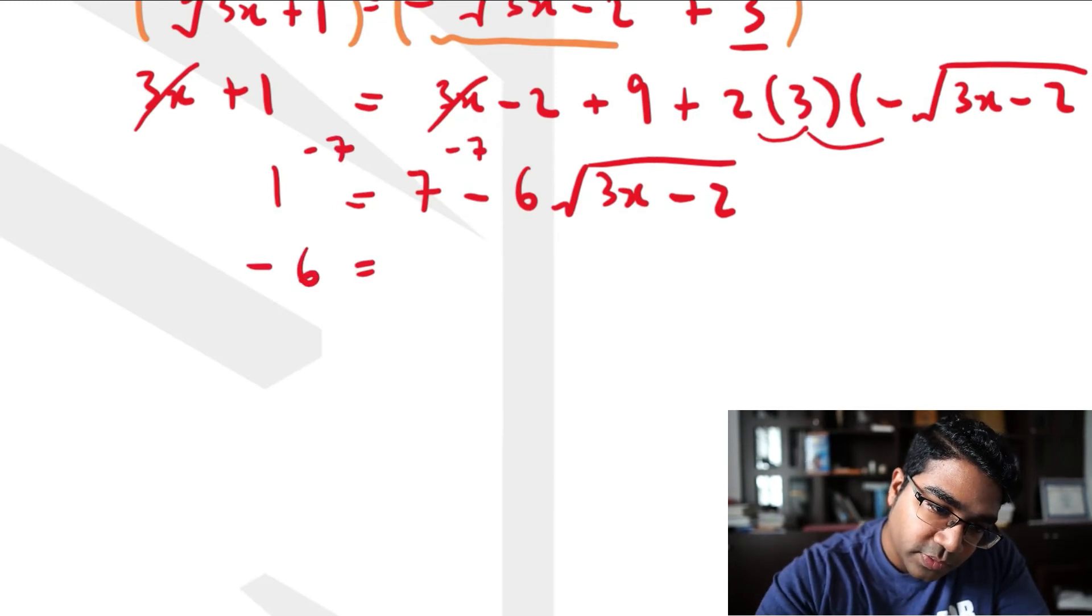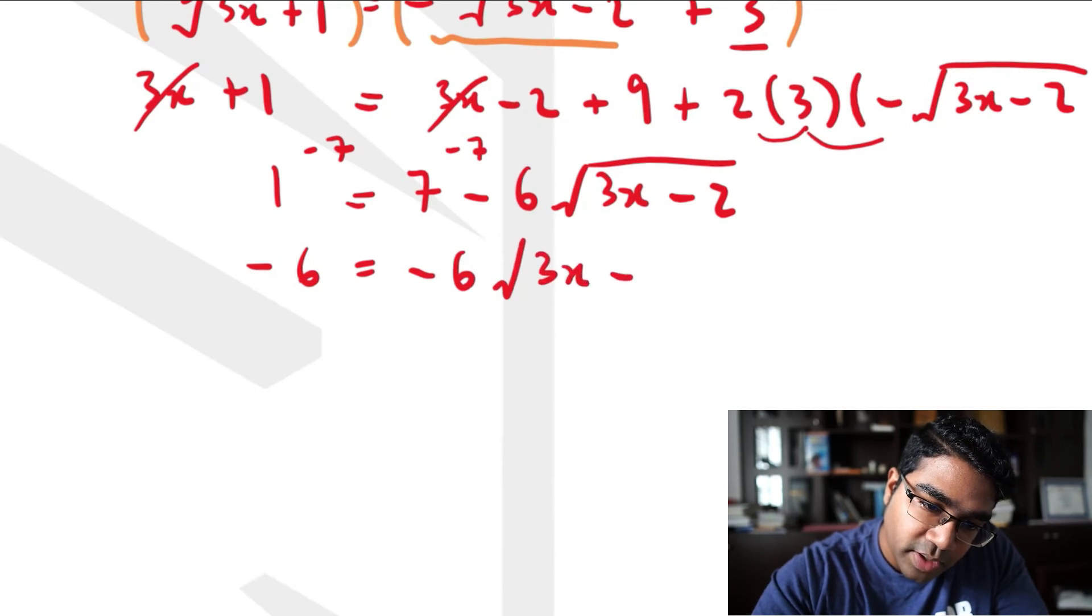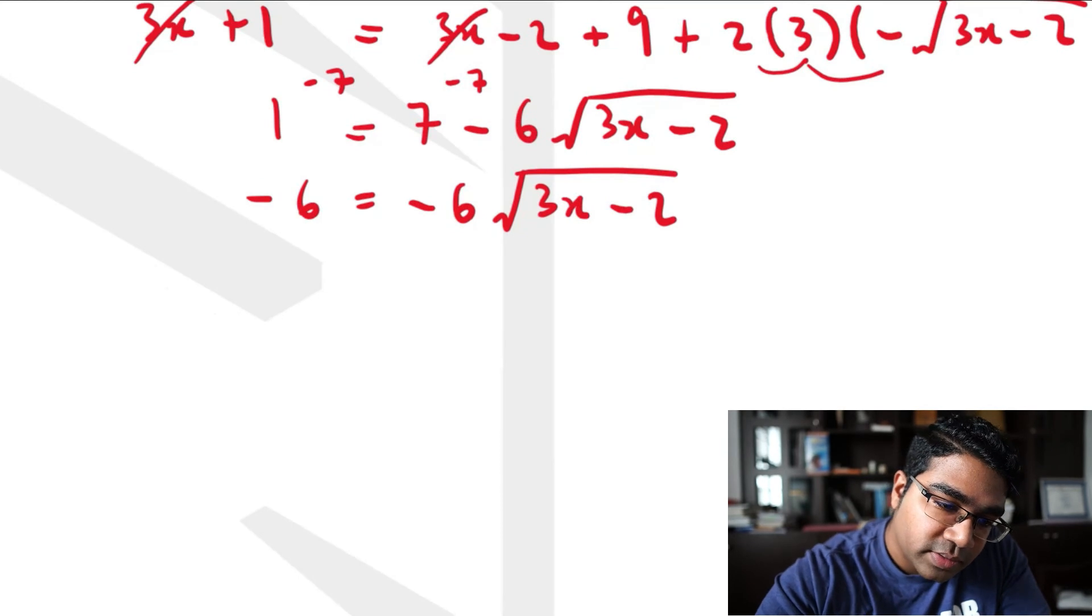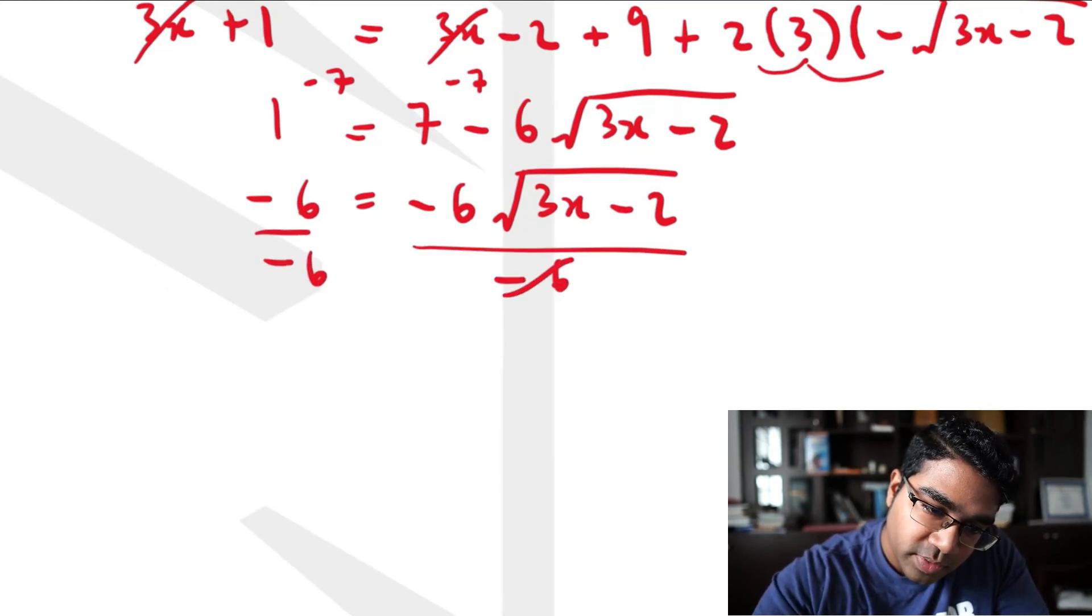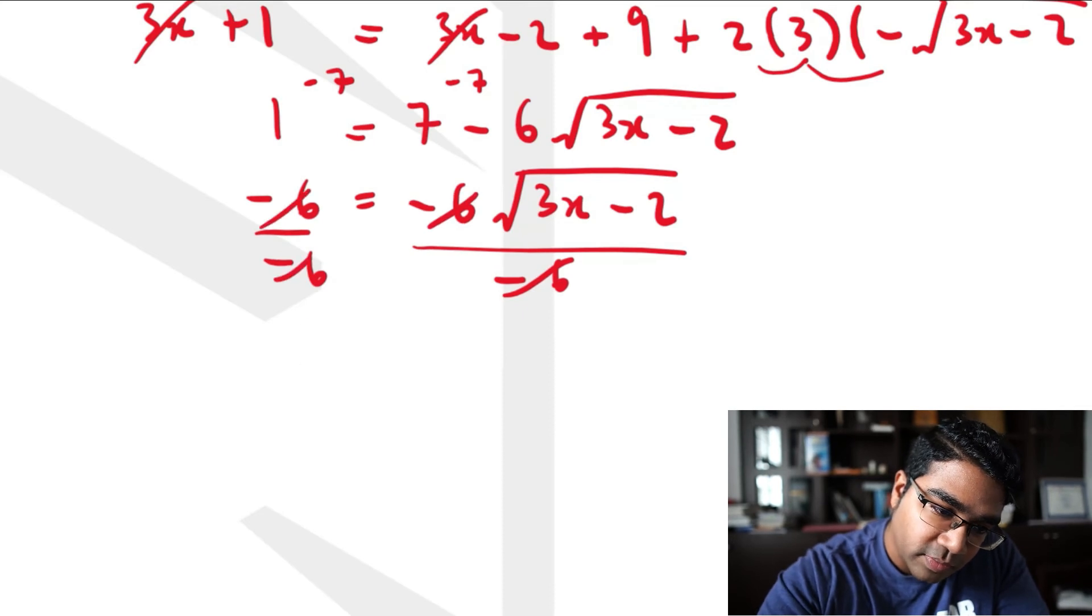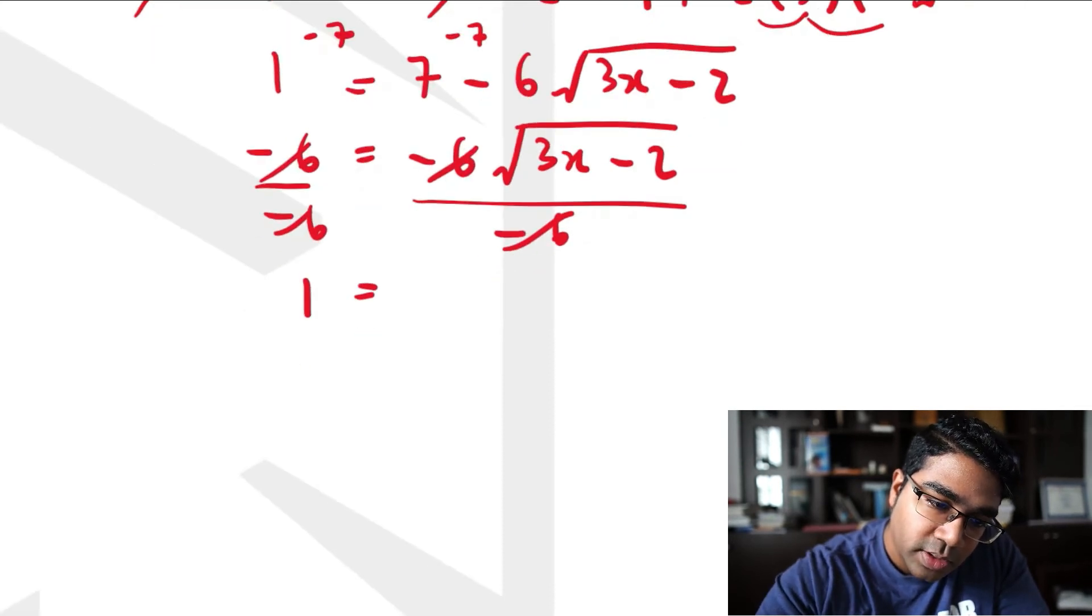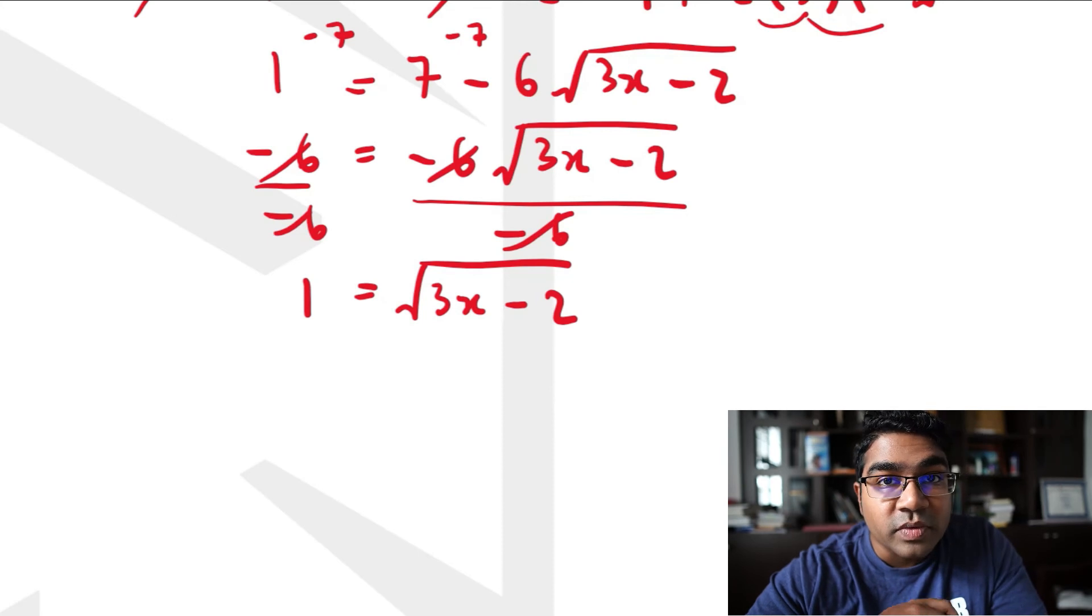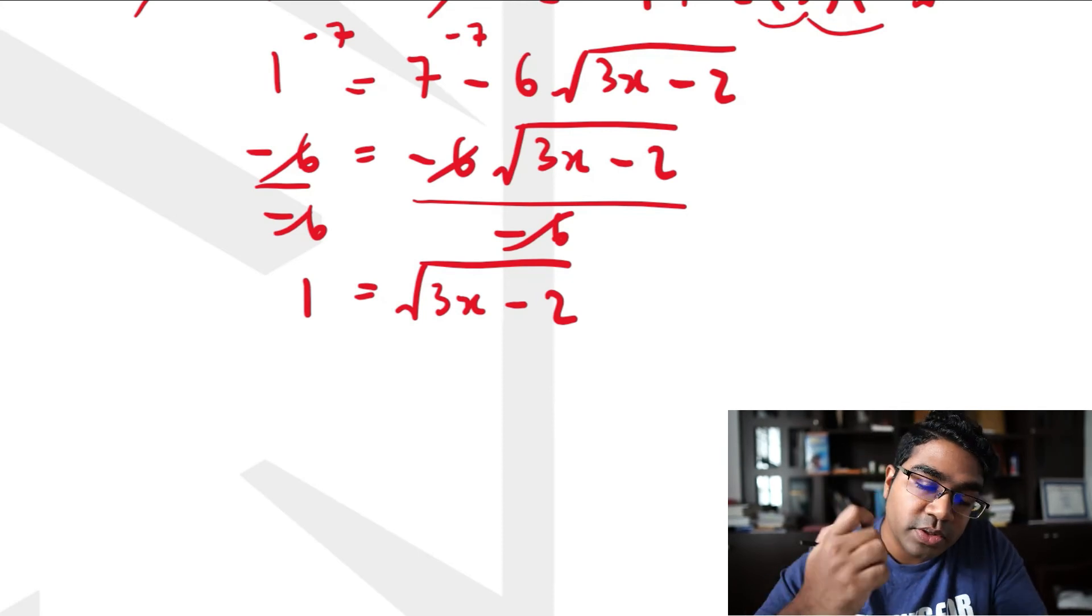From here, minus 7 on both sides, so we get -6 = -6√(3x-2). We can divide by -6 on both sides, so we eliminate the -6. And so you get 1 = √(3x-2). And now we get rid of the square root again. So this is the second time we are squaring, double square root, double square.